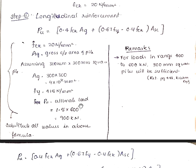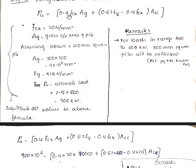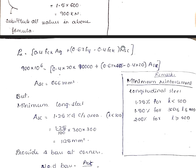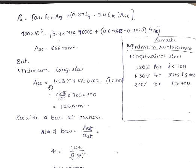FY is the grade of steel we have. P is the ultimate load. We have the service load as 600 and we have to multiply with the factor of safety, so that we will get 900 kN. All these values should be substituted in this formula. If we solve for ASC, we will get 666 mm square. But this is not enough. We have the guidelines in the remarks I have mentioned here. Minimum reinforcement for longitudinal steel is 1.25% if the length of the pile is less than 30 times the lateral dimension.